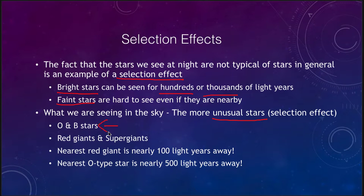So what do we see in the sky are the more unusual stars because of this selection effect. We see the O and B stars; we see red giants and supergiants. But the nearest red giant is 100 light years away, the nearest O type star is 500 light years away. They're not common because we don't find any nearby, but they are visible across very large regions of space, whereas a typical star or even a star like our Sun would be invisible at these distances.